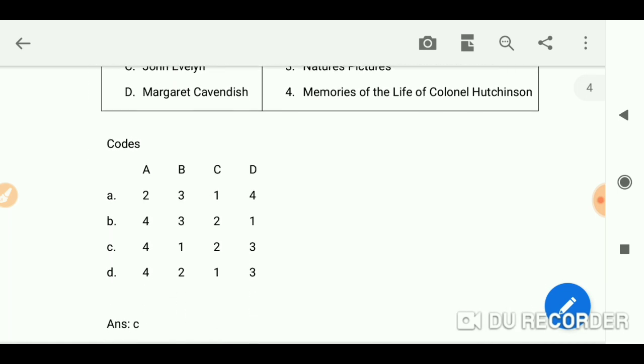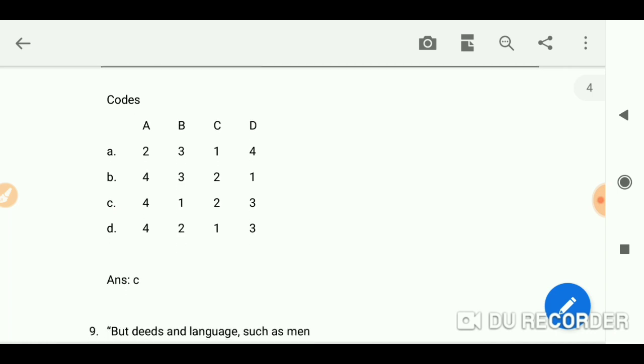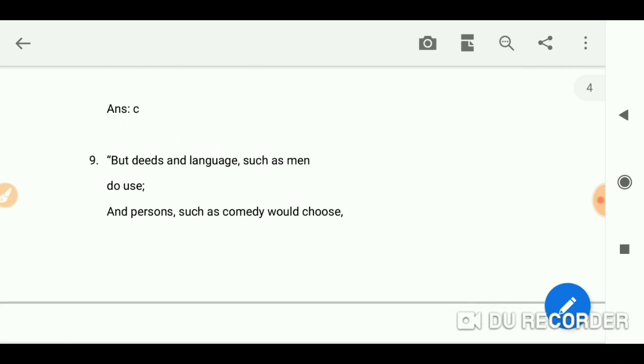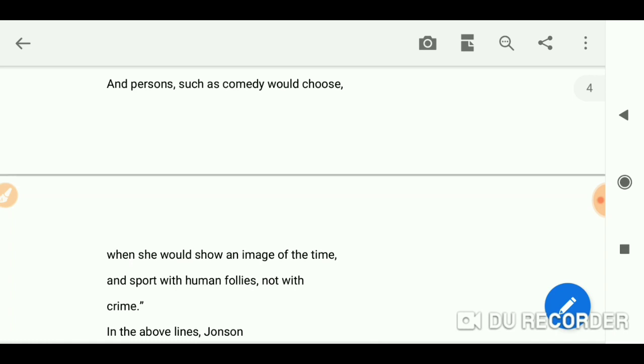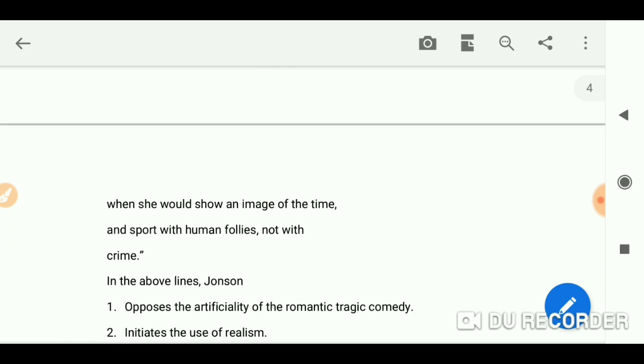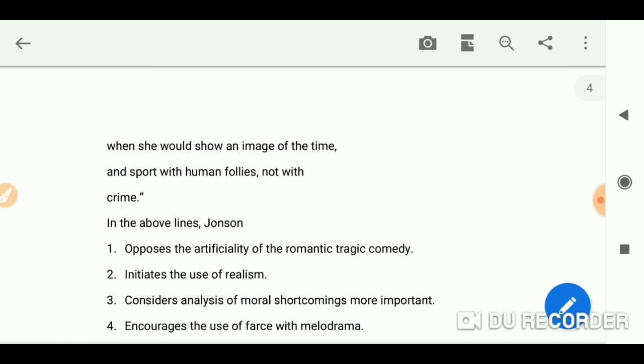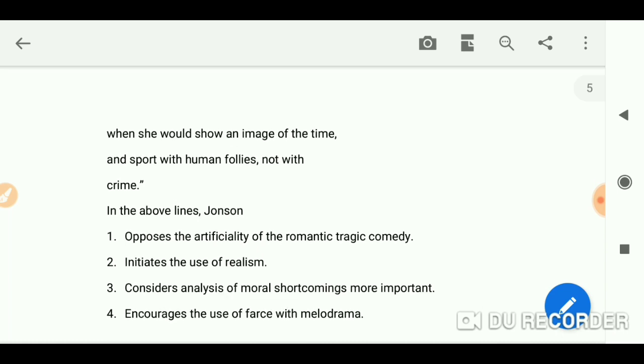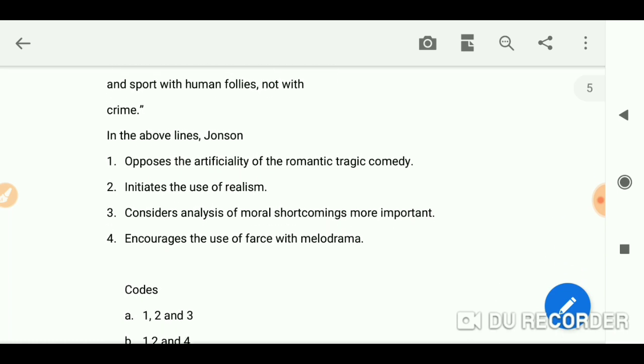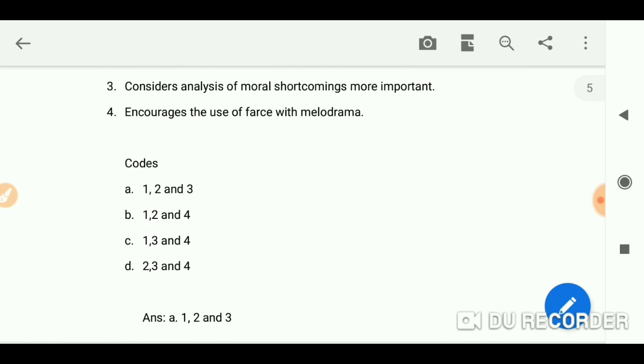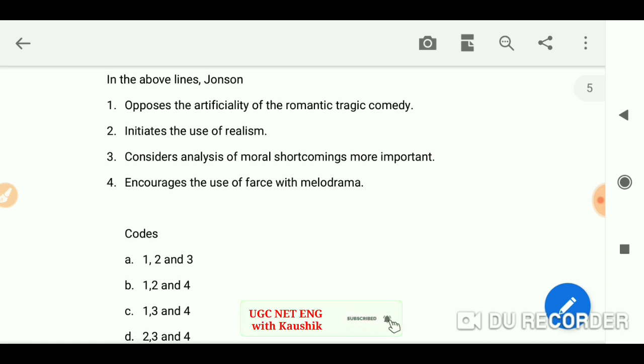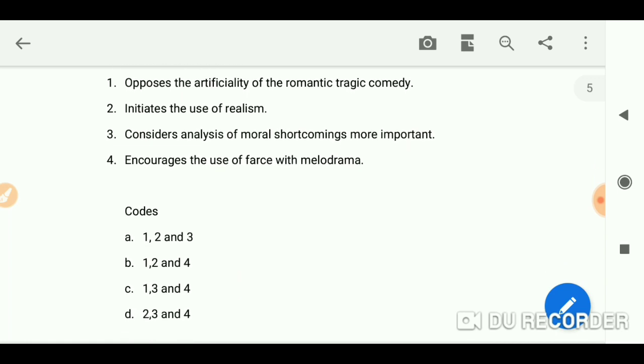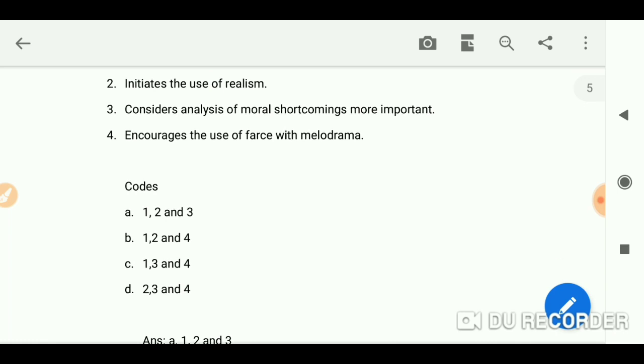But deeds and language such as men do use, and persons such as comedy would choose when she would show an image of the time and sport with human folly, not with crime. In the above lines, Johnson opposes the artificiality of romantic tragic comedy and initiates the use of realism and considers analysis of moral shortcomings. Answer is A.